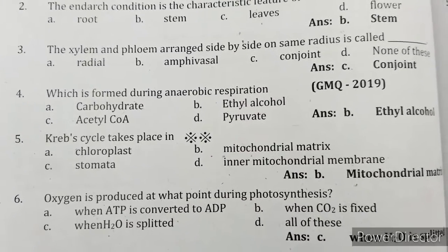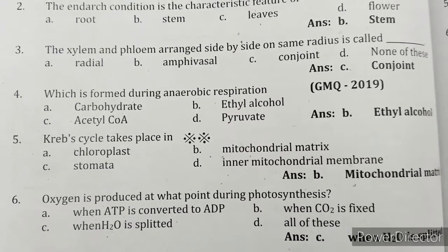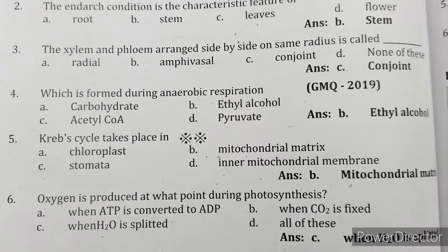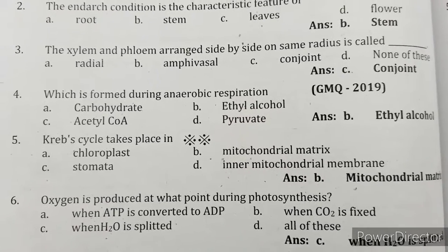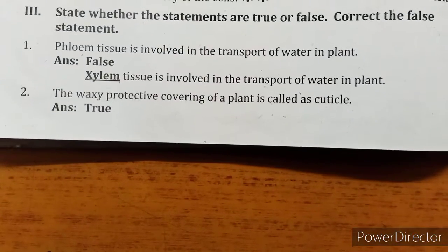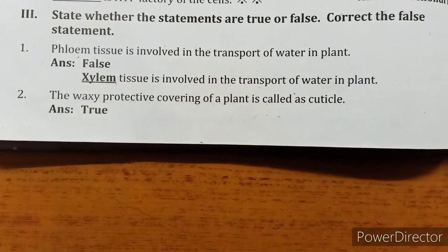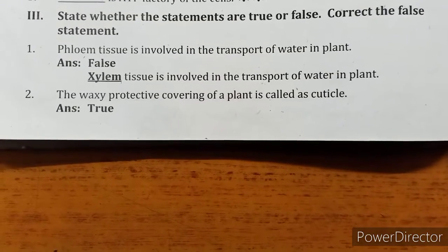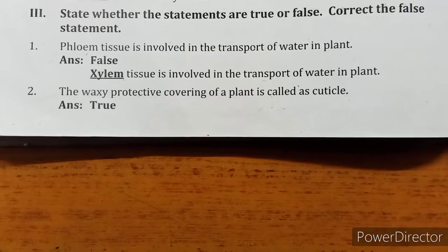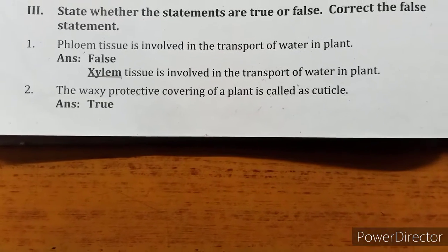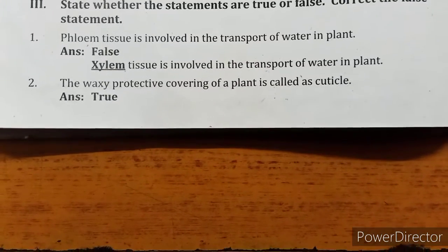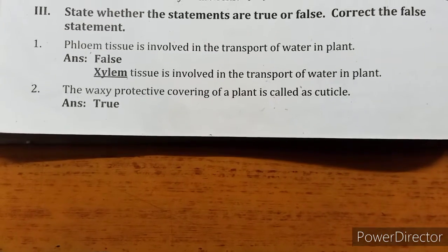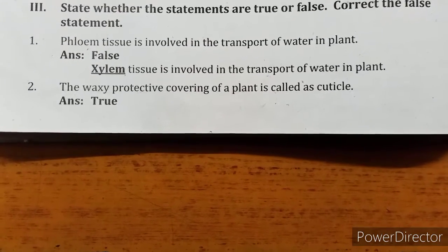Oxygen is produced during photosynthesis when H2O is split. State whether the statements are true or false. Phloem tissue is involved in the transport of water in plants — False; xylem tissue is involved in the transport of water in plants. The waxy protective covering of a plant is called a cuticle.